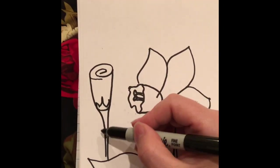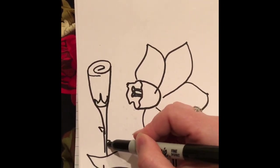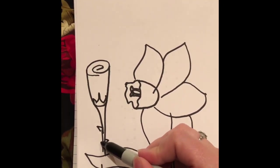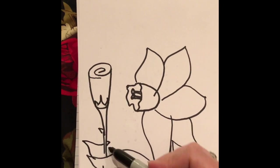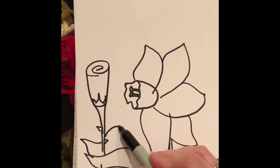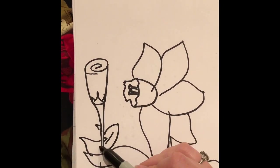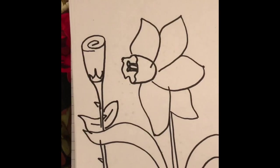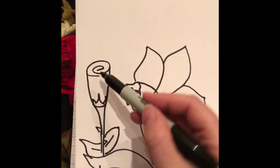Make sure it goes behind that leaf. And remember roses have thorns. So you can add some little thorns to your stem. Maybe you want to add some leaves. So these leaves kind of look more like typical leaves that you would see on a plant. So there I have a quick little easy rose.